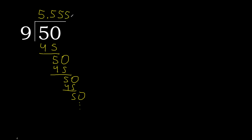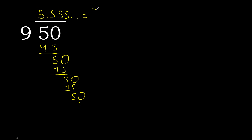Therefore 5 repeats. 50 divided by 9 is — after the point — 5 repeating. Repeat, like this or like this.